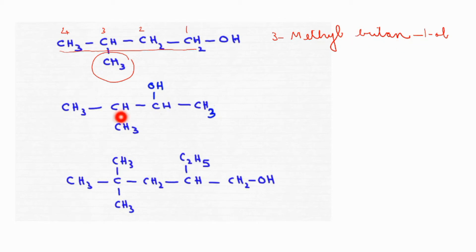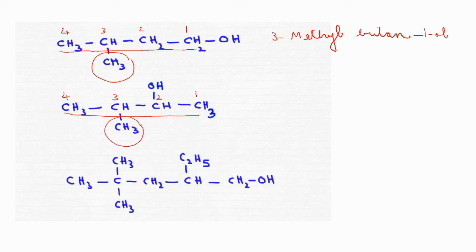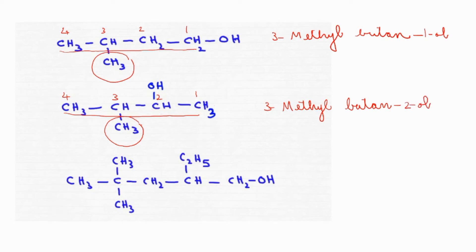Here again a substituent is present and a functional group is also present. The functional group attached carbon atom should be given more priority and the least number. This is the longest carbon chain; numbering should be done from the right so that this carbon atom gets number 2. The substituent should be told first as a prefix — 3-methyl. The root word is 'but'. It was butane; we remove 'e' and attach '-ol'. The OH group is attached to the second carbon atom, so that is butan-2-ol. The full name is 3-methylbutan-2-ol.